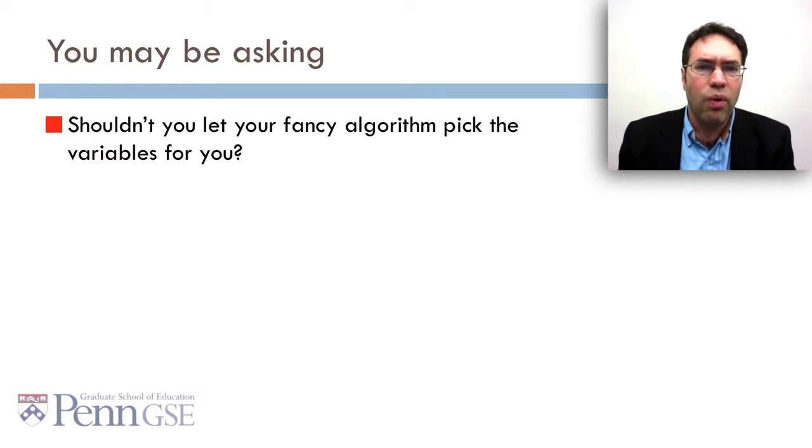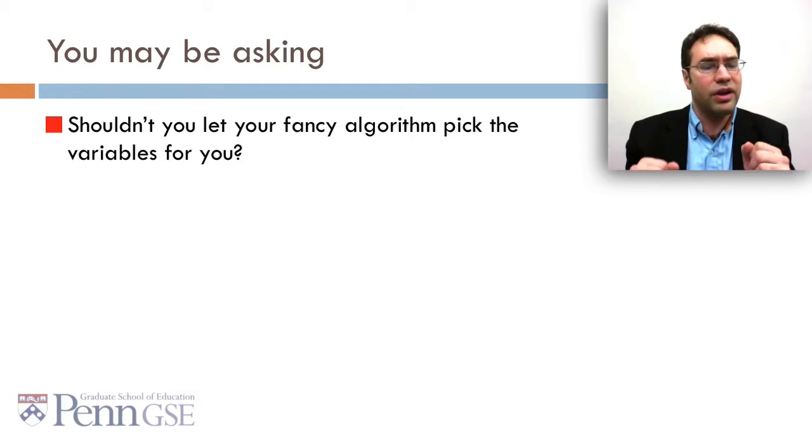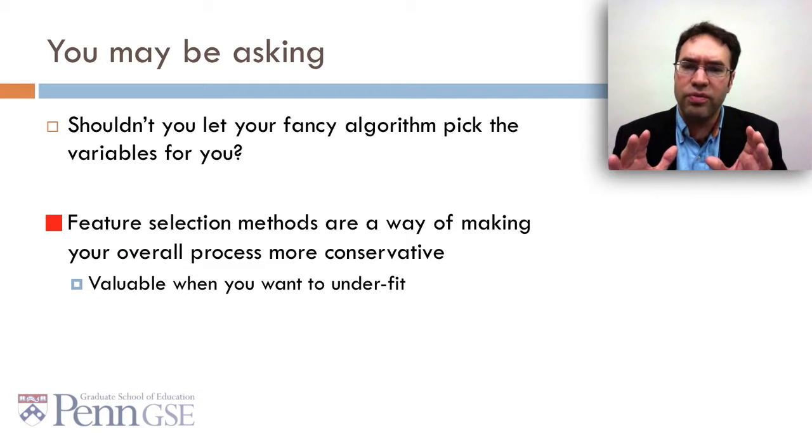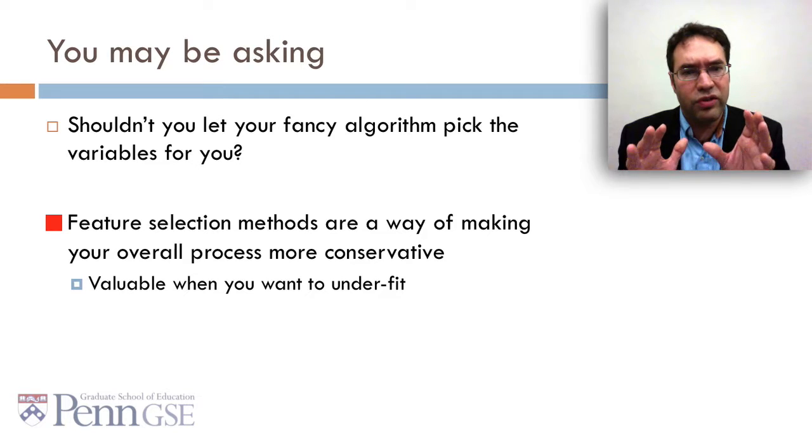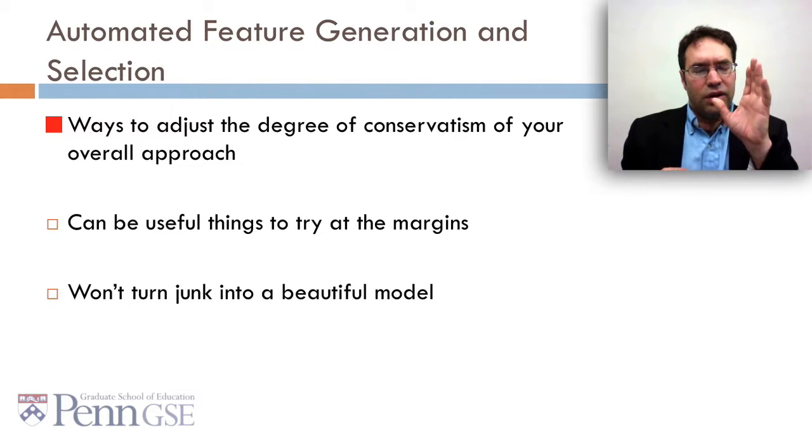Now you may be asking, why do automated feature selection? Why not let your fancy awesome algorithm pick the variables for you? Why not let RapidMiner or Weka or SAS EnterpriseMiner do its job? The reason is because feature selection methods are a way of making your overall process more conservative, and this is valuable when you genuinely want to underfit.